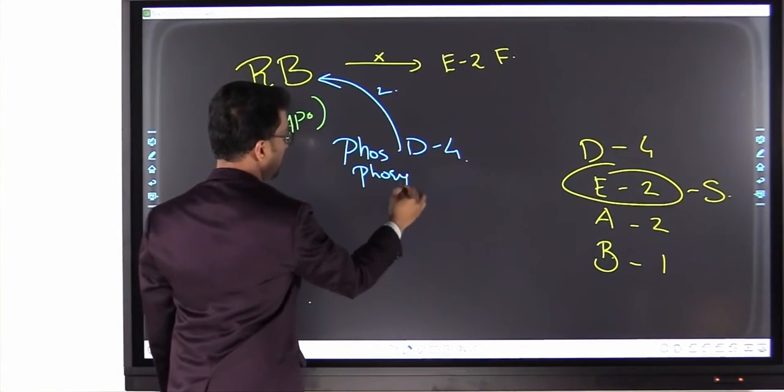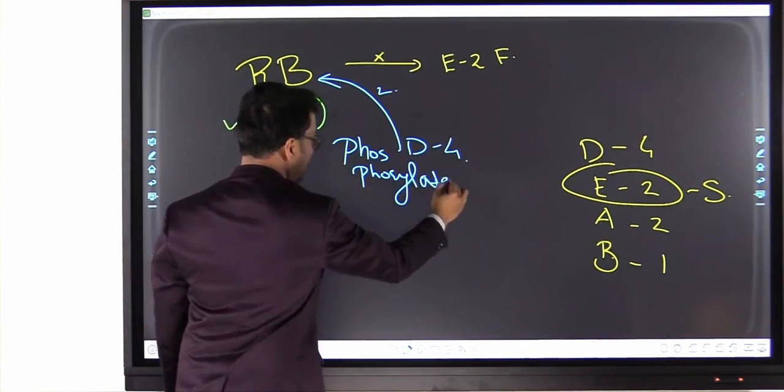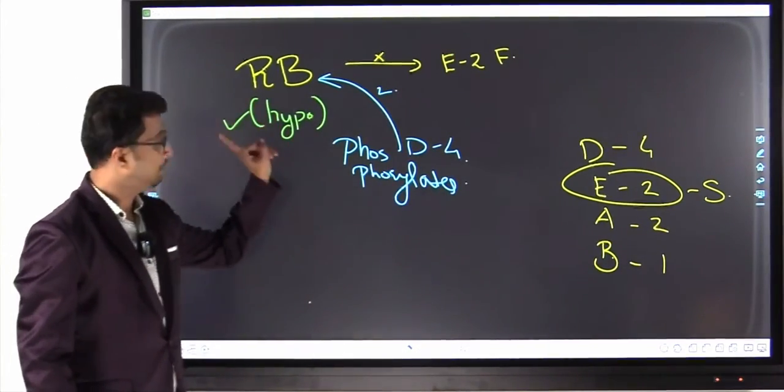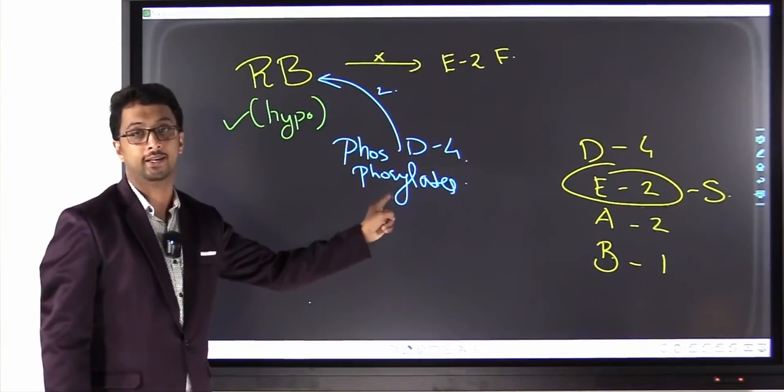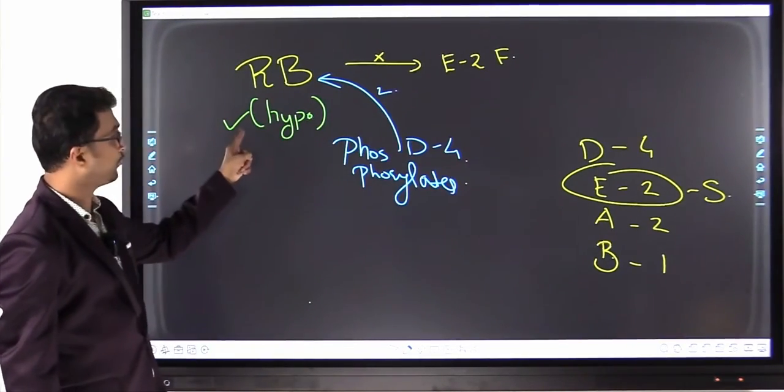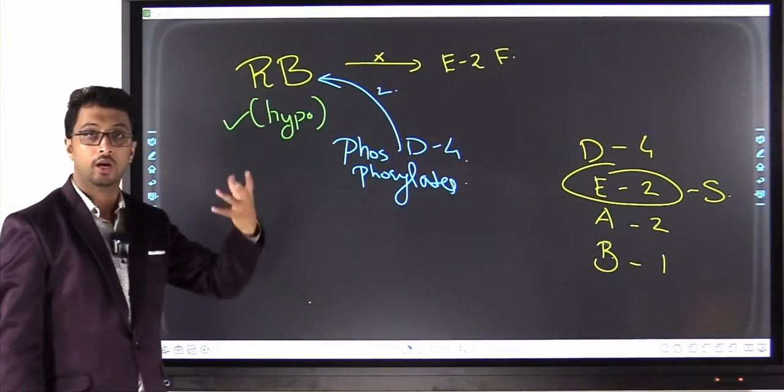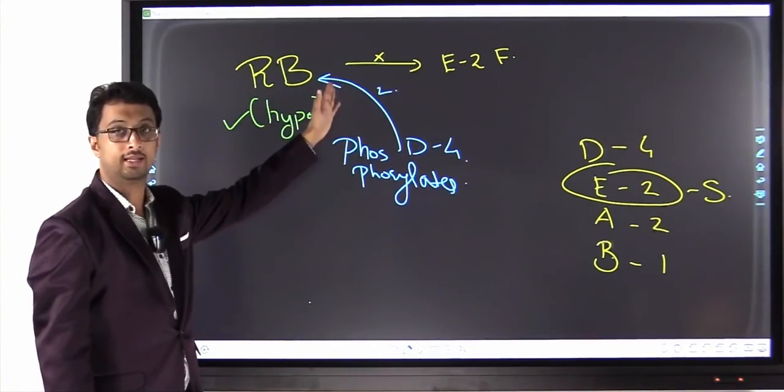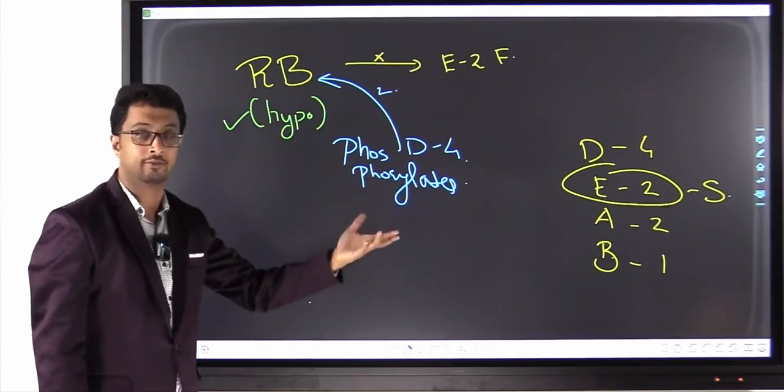Okay, it inactivates it. D4 inactivates RB gene by phosphorylating. The hypophosphorylated, that is, there is no phosphate group, so it is activated. Now its phosphate is added, it becomes inactive.